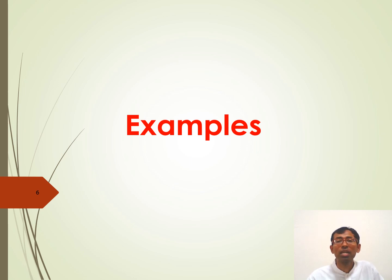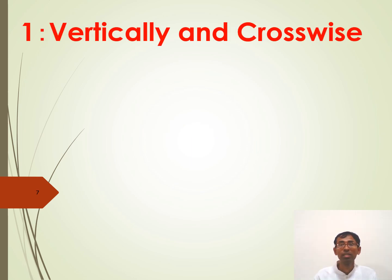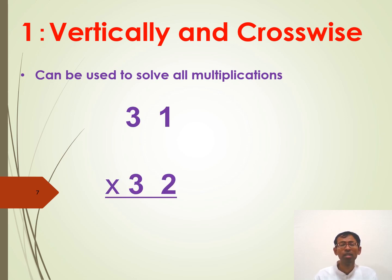We will see some examples. First, there is a sutra called vertically and crosswise. This sutra can be used to solve all multiplication problems. We will see. For example, this is a two-digit multiplication. The answer counts one digit at a time from left to right or right to left using this sutra vertically and crosswise.